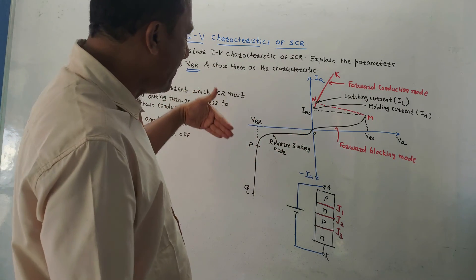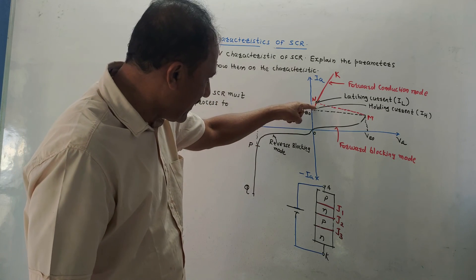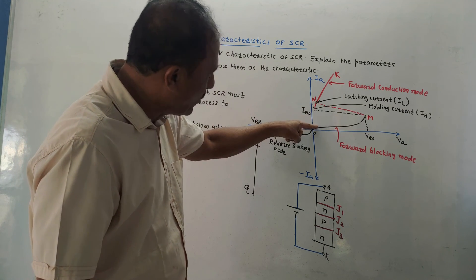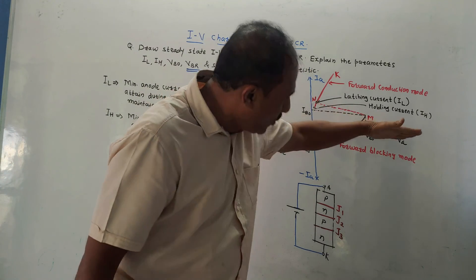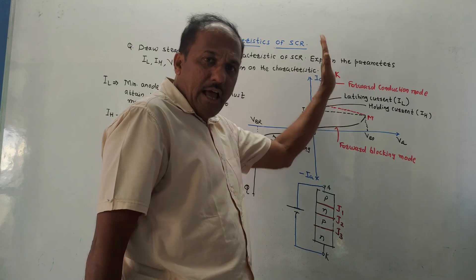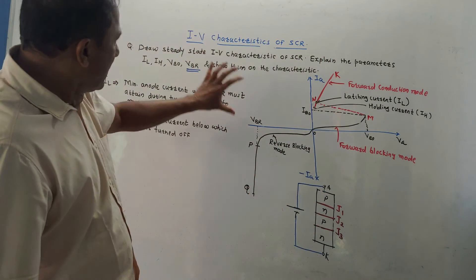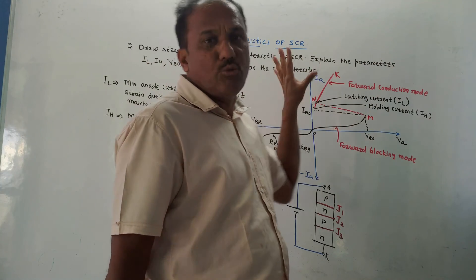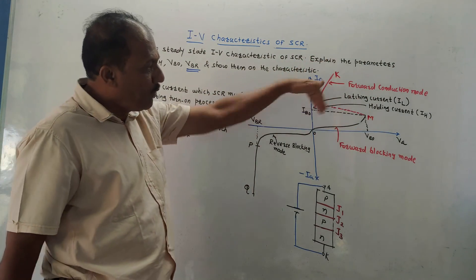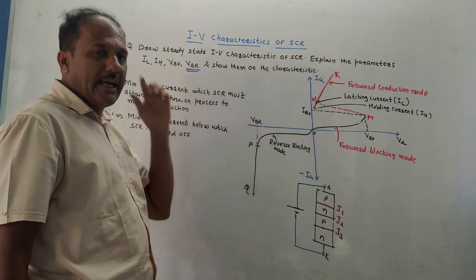That means if we won't maintain the holding current, I mean if the current, this holding current IH is below this value, then SCR will be turned off. Actually, this axis is the anode voltage axis and this axis is the anode current axis. So this is the static I-V characteristics of SCR, which is the most important part. I have already explained all the important parameters related to this diagram.